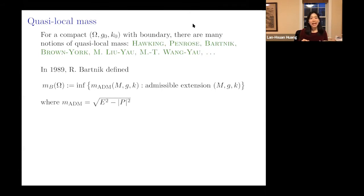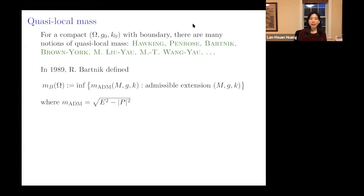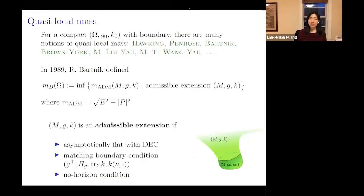Here we have a compact region, and analogously to how in PDE you define the capacity of a set by looking at extensions rather than functions on the set itself, Bartnik defined the Bartnik mass of a compact region by looking at all possible admissible extensions. You extend the region so you can compute the ADM mass, and then you take the infimum of the ADM mass over all possible admissible extensions. A lot of information is hidden in the word 'admissible.'